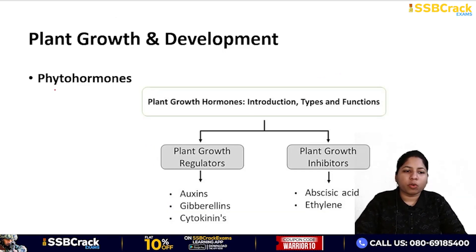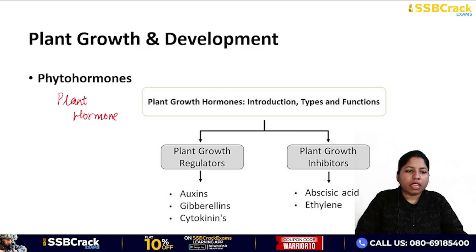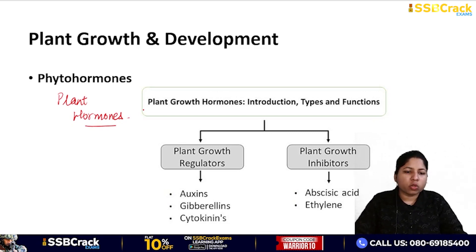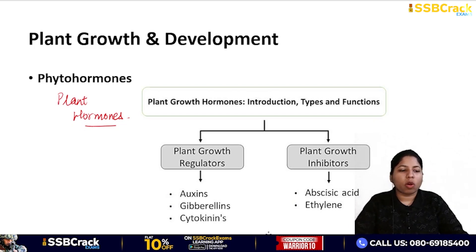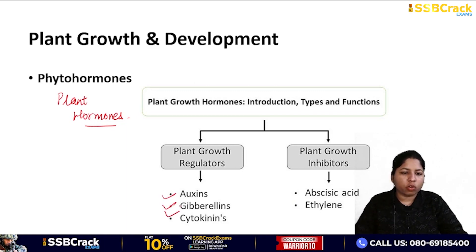Now coming to the next topic — plant growth regulators, or phytohormones. Just as we have hormones in our body, similarly there are plant hormones that help in plant growth and development. Plant growth regulators that promote growth include auxin, gibberellins, and cytokinins. Plant growth inhibitors are abscisic acid and ethylene — they inhibit growth.